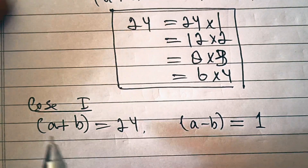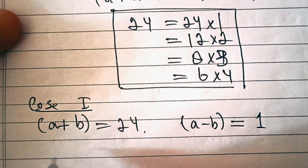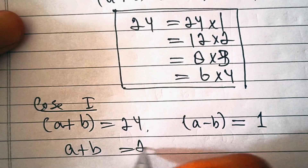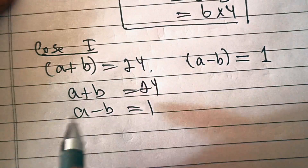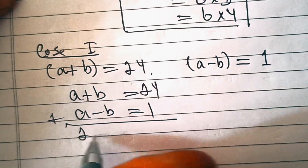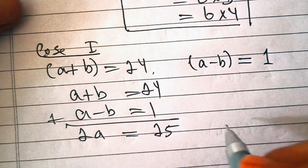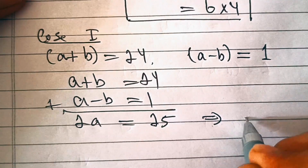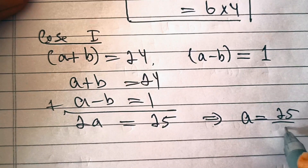We need to find out the values of a and b here. Let's add these two equations — a plus b equals 24 and a minus b equals 1. Adding them, we get 2a equals 25, which means a equals 25/2.